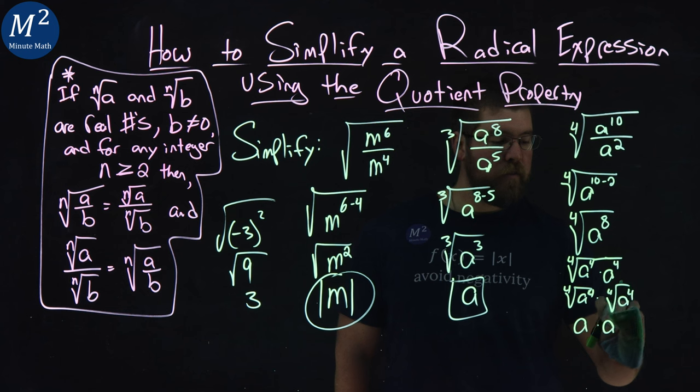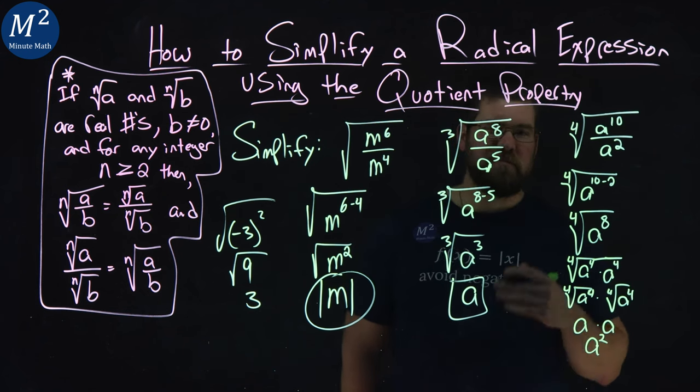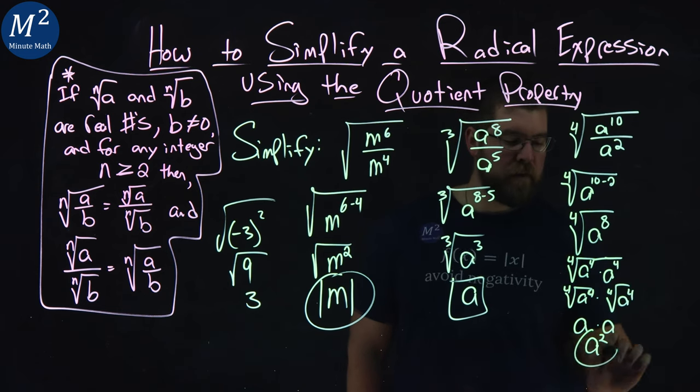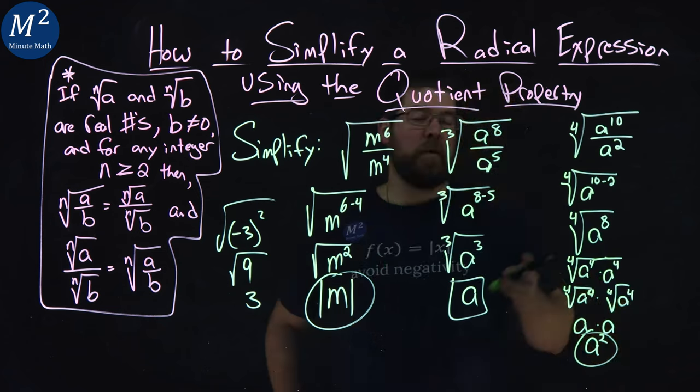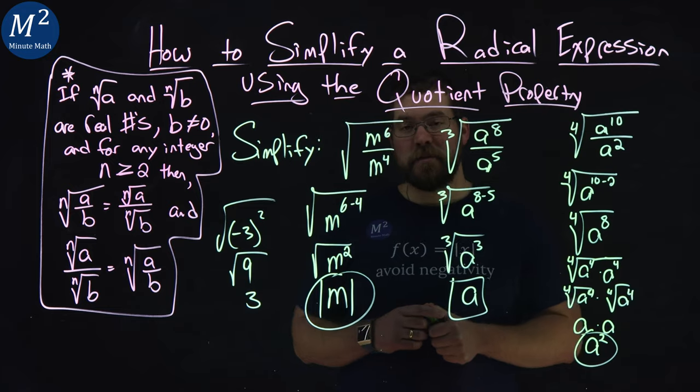And normally, if it was just individually, we'd have to worry about the absolute value. But a times a is a squared, which treats it like an absolute value. We can't really have a negative output there. And there we have it: a squared. So fourth root of a to the ten over a squared simplifies to just be a squared.